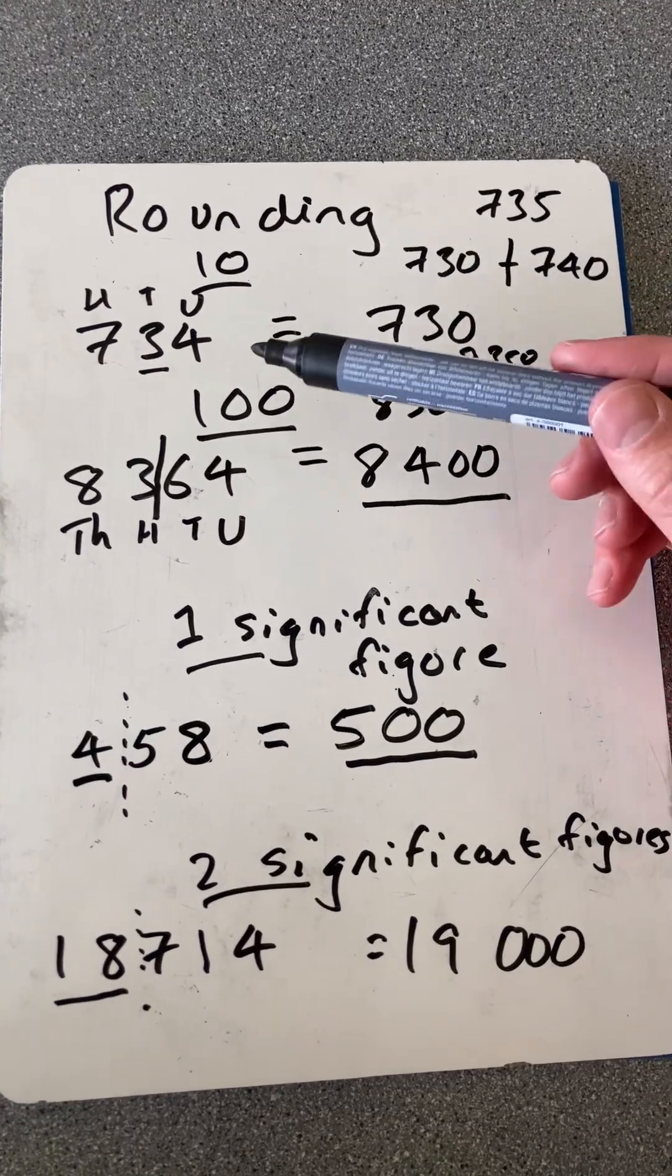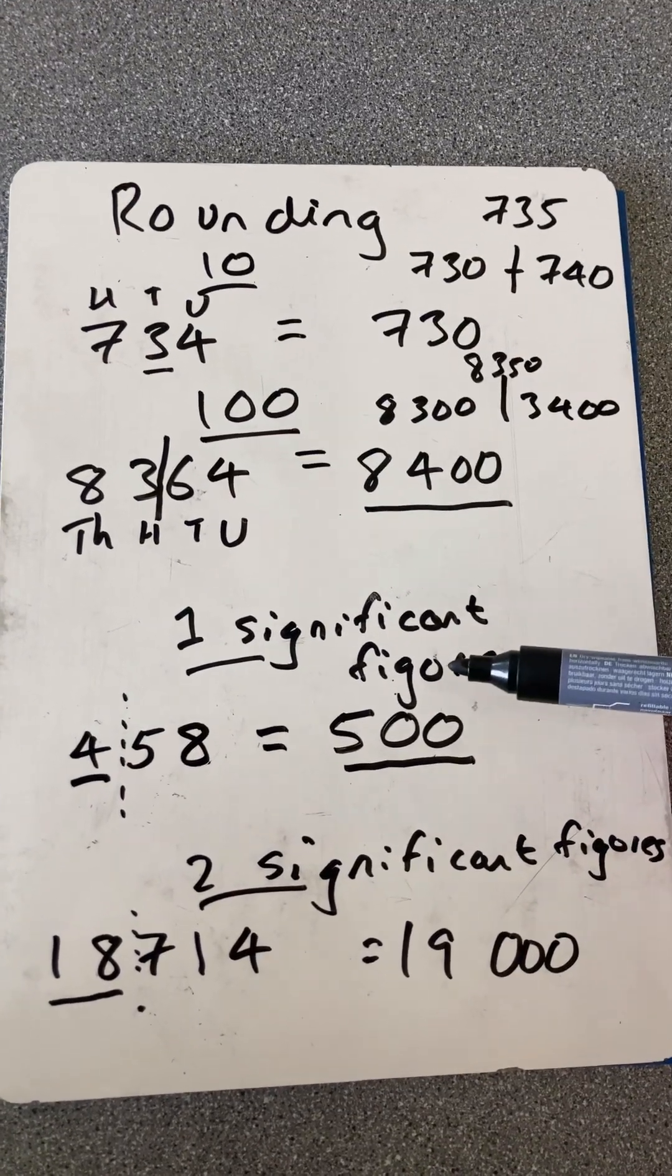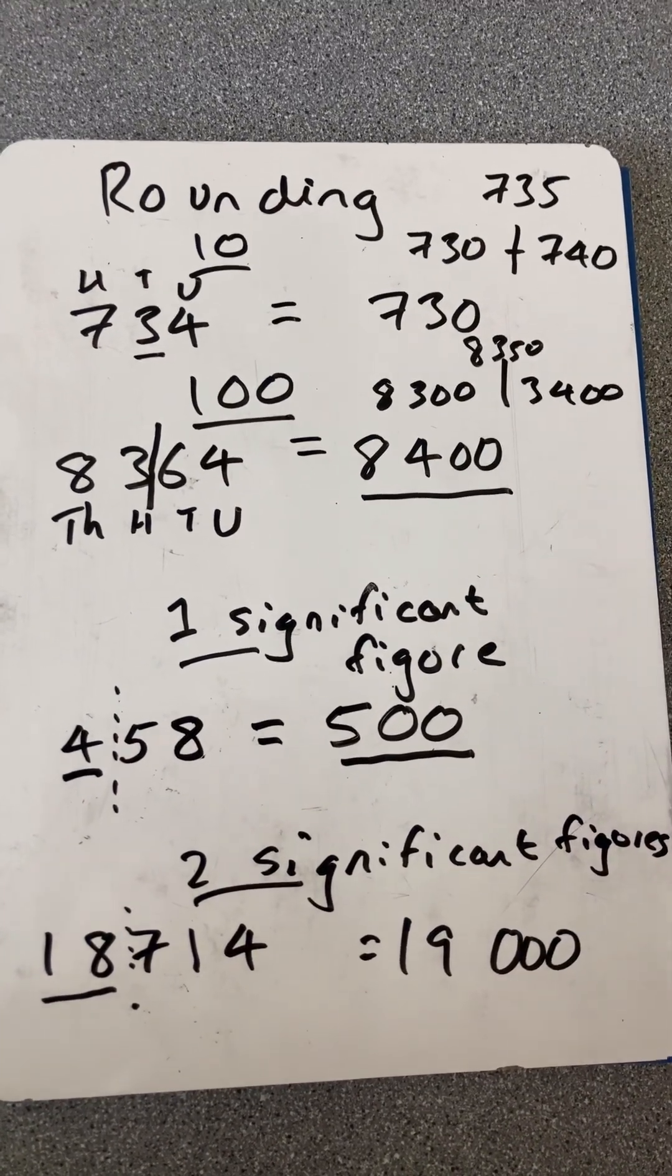So there we go. That's rounding to the nearest 10, nearest 100, one significant figure, and two significant figures. Thanks for watching.